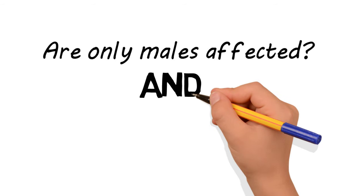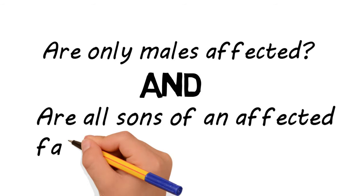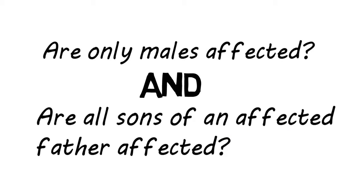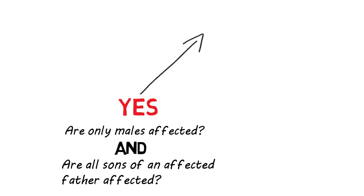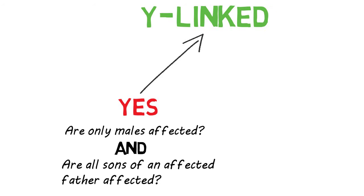The first two questions you'll ask are: are only males affected, and are all sons of an affected father affected? If the answer is yes, then the pattern is Y-linked, meaning a genetic disorder affiliated with the Y chromosome. Since only males possess a Y chromosome, all males receive their Y chromosome from their father, and a Y-linked trait will never show up in males without having an affected father. If you reach this point, you have your solution: Y-linked.